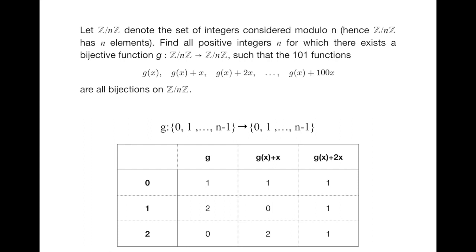If we try a little bit harder, we can test all the bijective functions when n equals 3. And indeed, none of them satisfy this condition. However, we don't want to test all the possibilities when n gets larger, so let's see how we handle it.